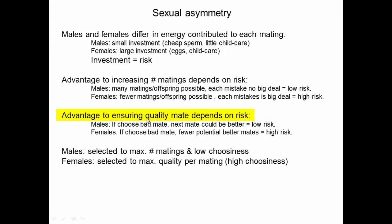If we think about the advantage to ensuring the quality of the mate, that also depends on risk. For males, if they choose a bad mate, the next mate might be better — they can make plenty of choices, they have low risk, and it's not necessarily advantageous to spend a lot of time ensuring mate quality, especially if that causes them to miss mating opportunities. For females, because of higher risk, if they choose a bad mate, they have fewer potential good mates in the future, and this high risk means the mistake has bigger consequences.